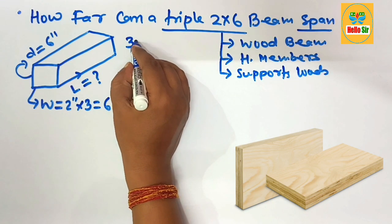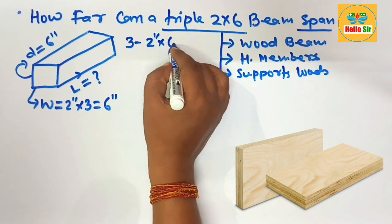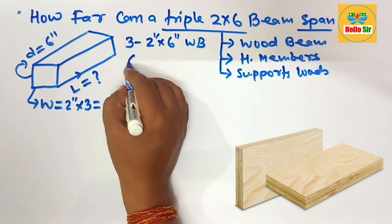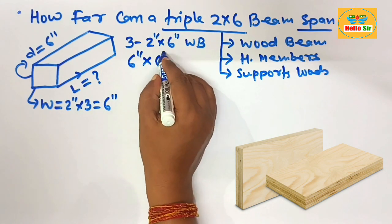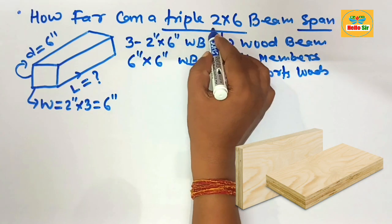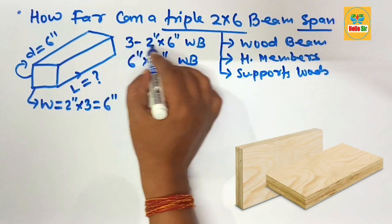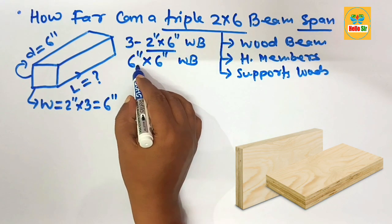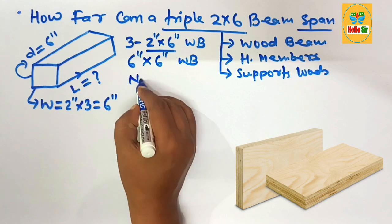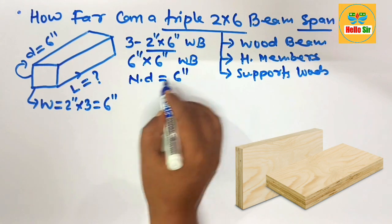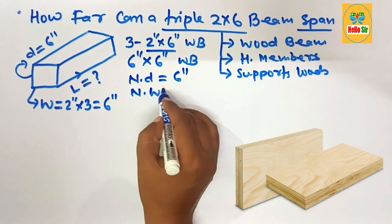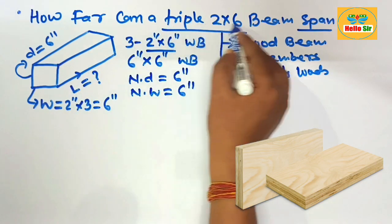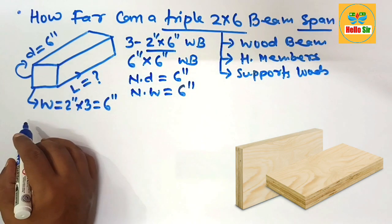A triple 2 by 6 beam can also be written as three pieces of 2 inch by 6 inch wood beam. Three multiplied by two equals six, so it is also described as a six inch by six inch wood beam. When three pieces of 2 by 6 inch wood beam are nailed together, they form a six by six inch beam. The nominal depth is six inches and the nominal width is also six inches.